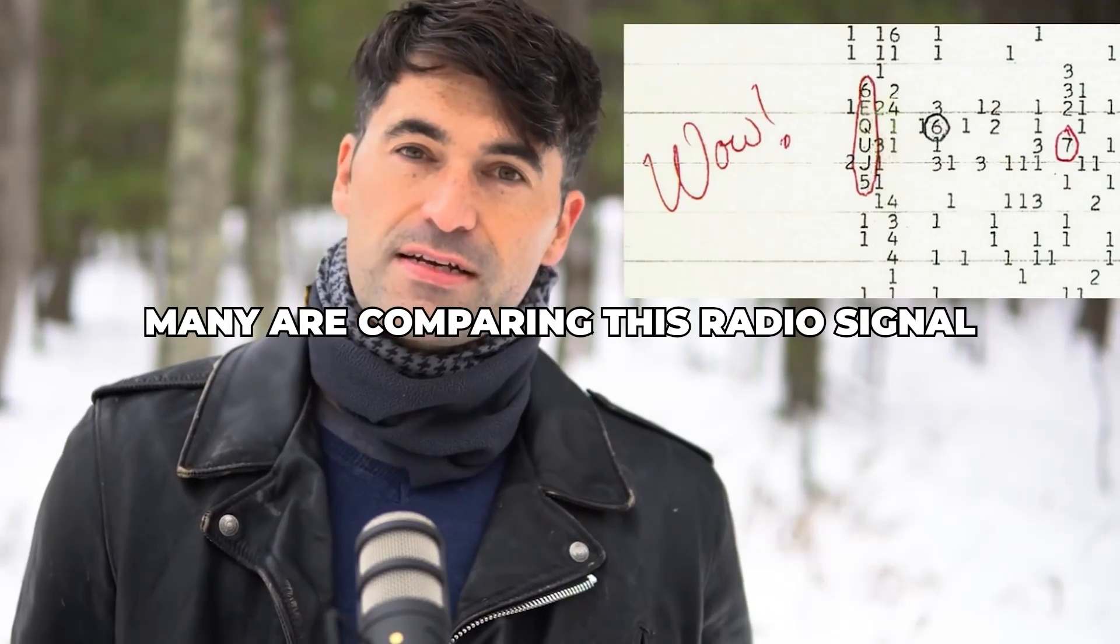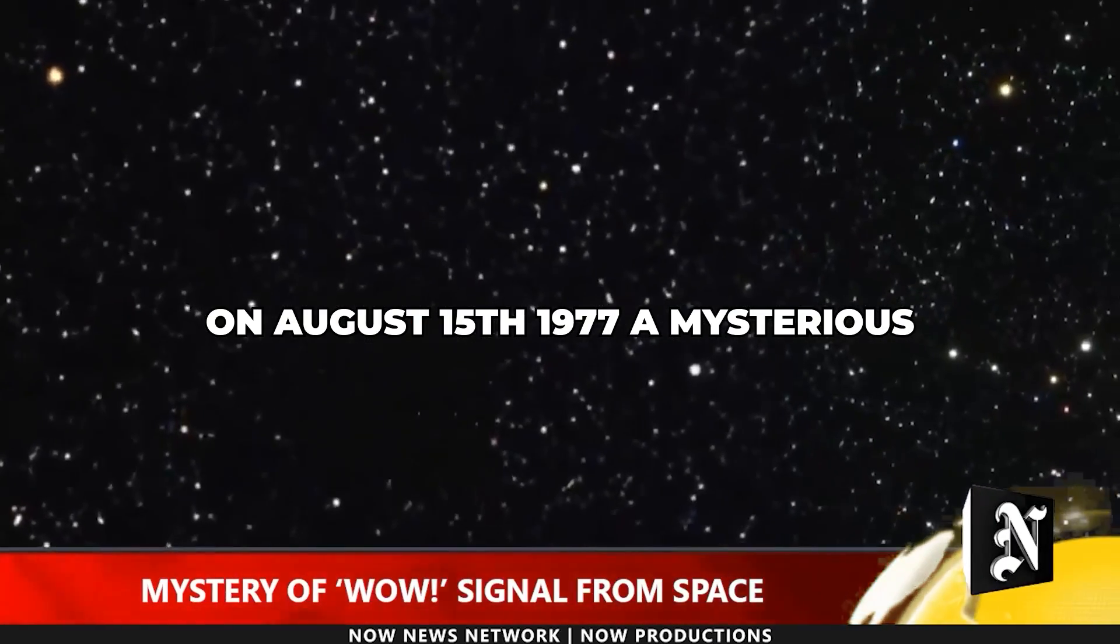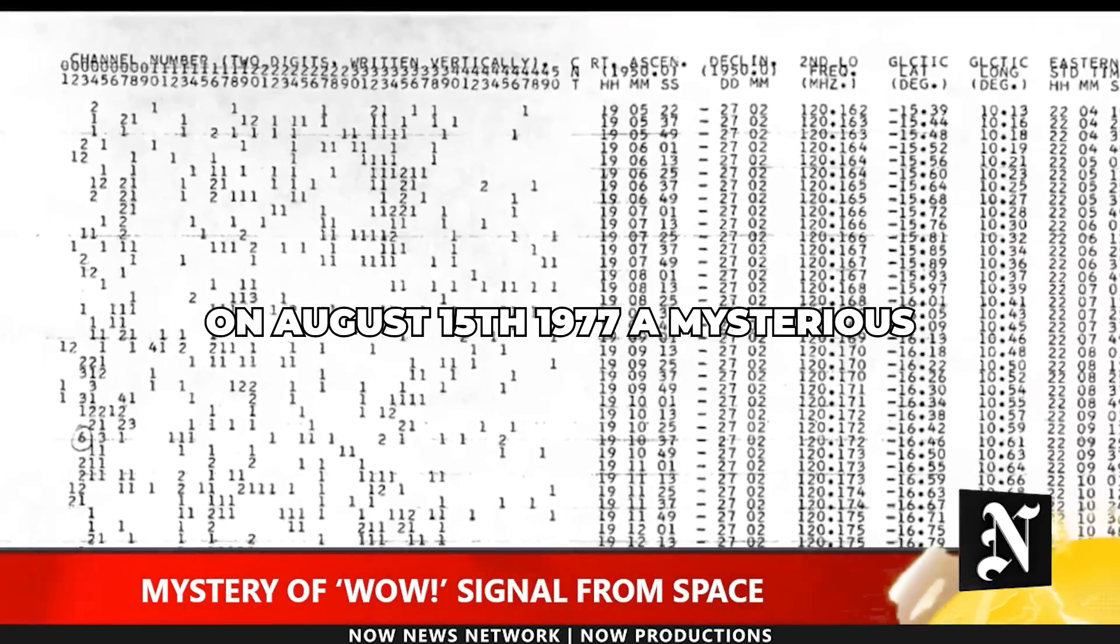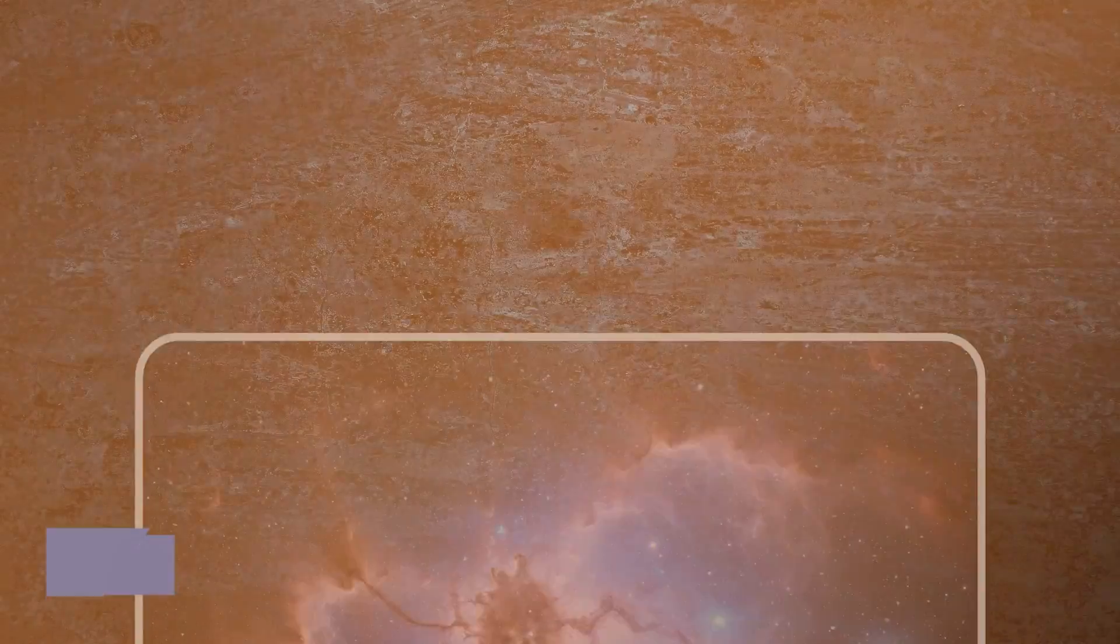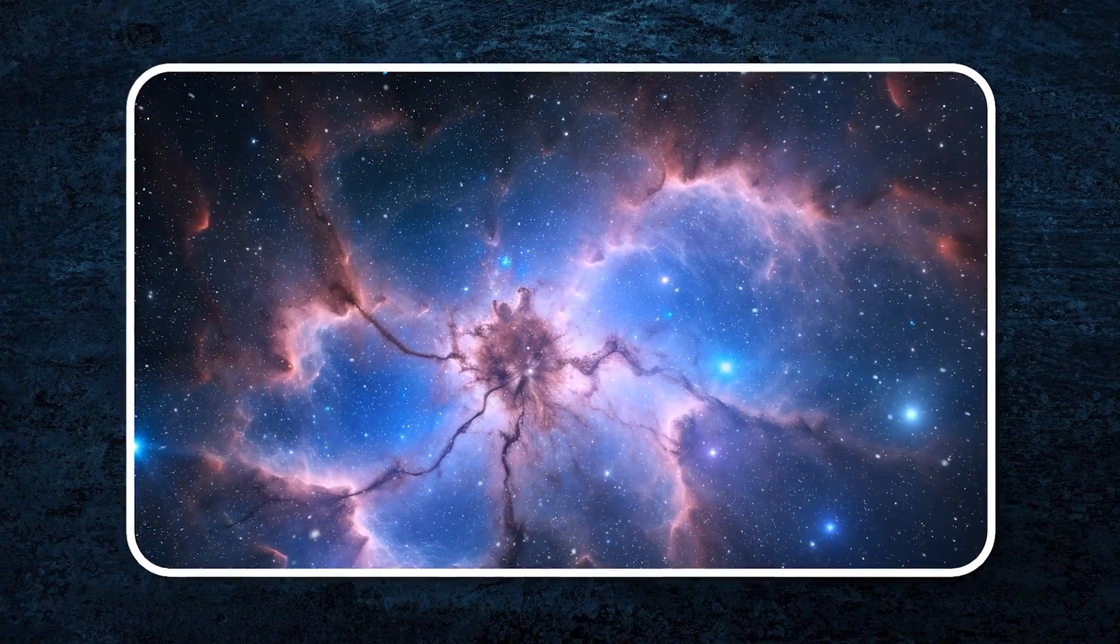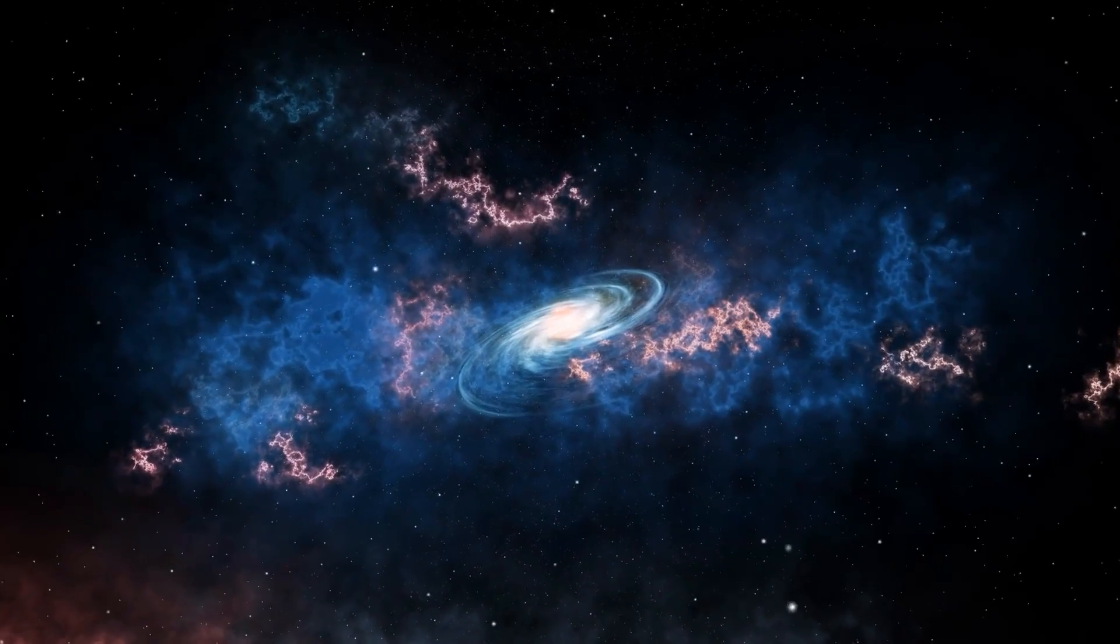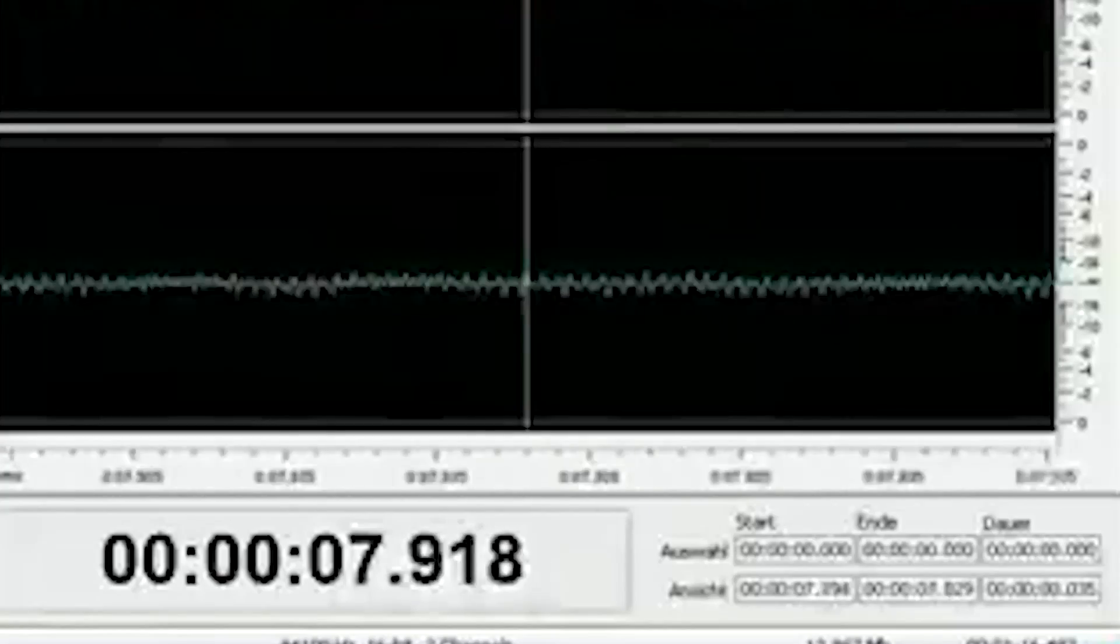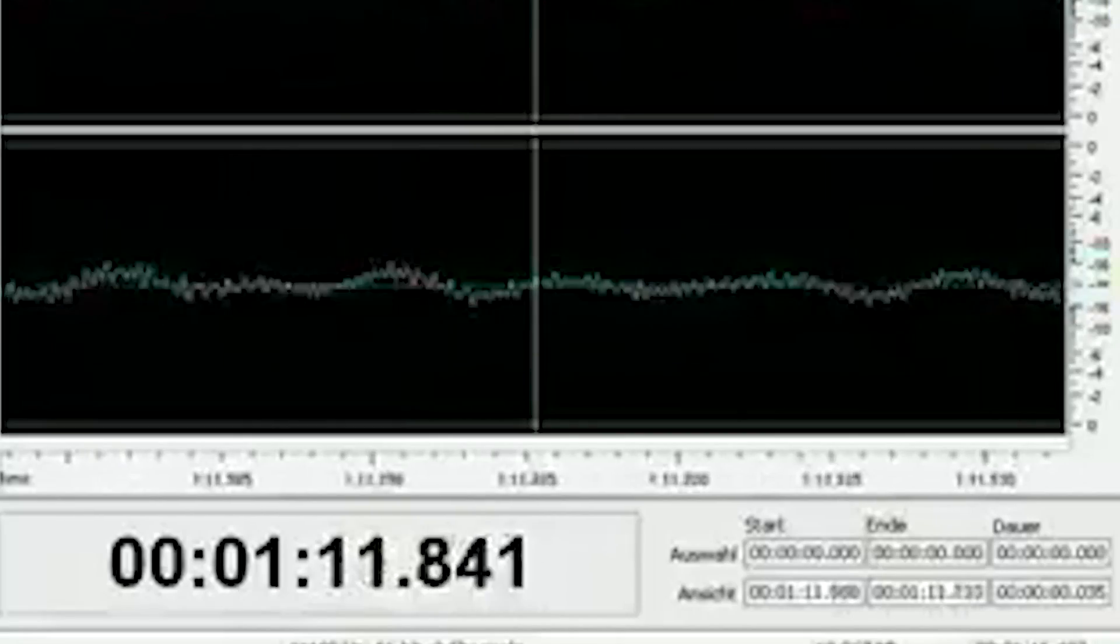Many are comparing this radio signal to the famous WOW signal. On August 15th, 1977, a mysterious WOW signal had briefly blared through a radio telescope. NASA captured a mysterious signal from deep space. Known as the WOW signal, this one-time 72-second burst from the Sagittarius constellation has left scientists speechless for decades.